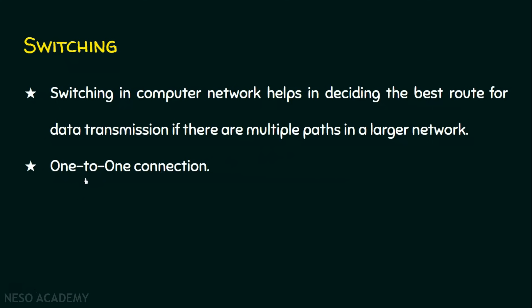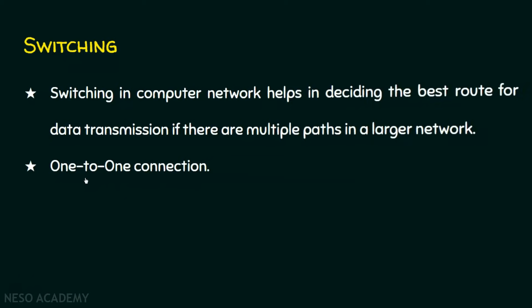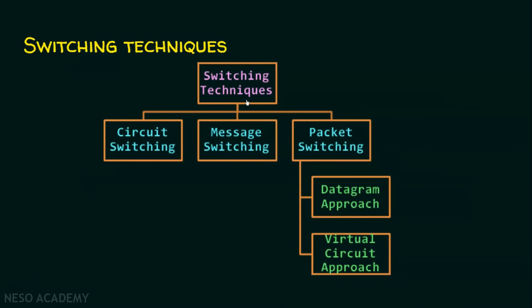Now we will see the various techniques in switching. Basically, switching techniques are classified into three types: circuit switching, message switching, and packet switching. Packet switching is further categorized into the datagram approach or the virtual circuit approach. We will see each one in detail.